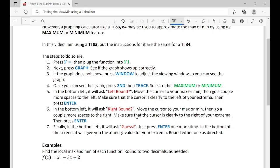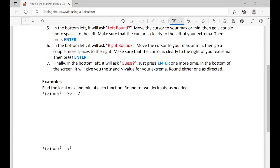Then it's going to ask for the right bound, which means you're going to move your cursor to the max or the min and then go a few more spaces to the right. Then make sure your cursor is clearly to the right and then press enter again. Finally, it's going to say guess. That just means you hit enter one more time and at the bottom it's going to give you the x and y value for either the max or the min. You need to round as directed depending on the question.